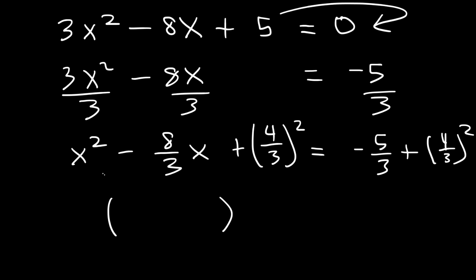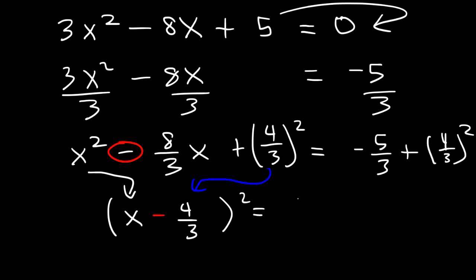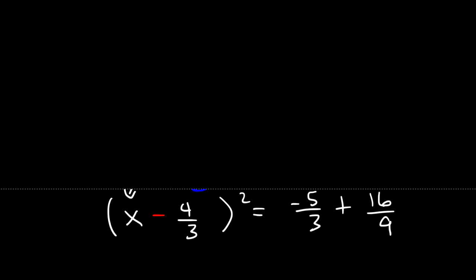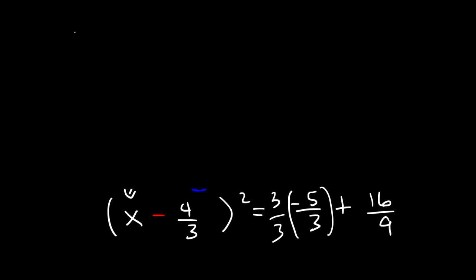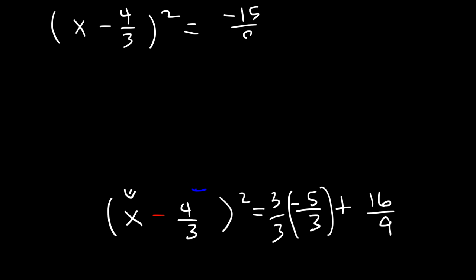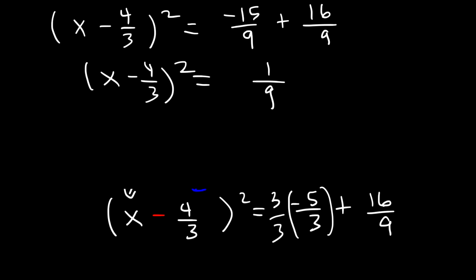Now let's complete the square. It's going to be x minus whatever we see here: x minus 4 over 3, squared. On the right side, 4 squared is 16 and 3 squared is 9. So now we need to get common denominators. Multiply negative 5 over 3 by 3 over 3 to get negative 15 over 9. Plus 16 over 9. Negative 15 plus 16 is 1, so we have 1 over 9.